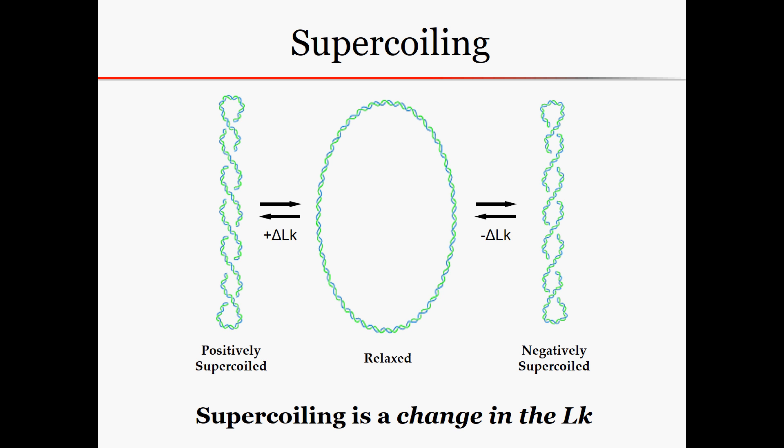Supercoiling comes when we alter that base linking number. Shown in the middle is a relaxed plasmid, which would be the 362 links. If we increased the number of times one strand went around the other, that would be called positive supercoiling, and if we decreased it, it would be called negative supercoiling. Because DNA really wants to keep that nice B-form structure, it will deform in three-dimensional space in order to maintain that base pairing and rise on a local level.